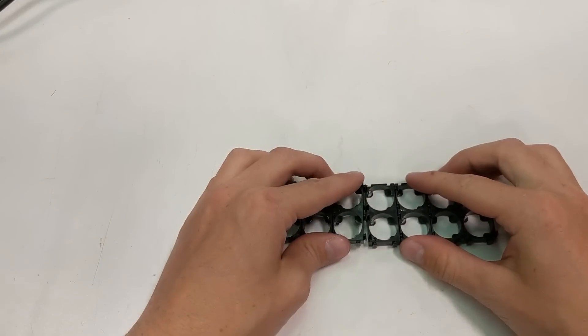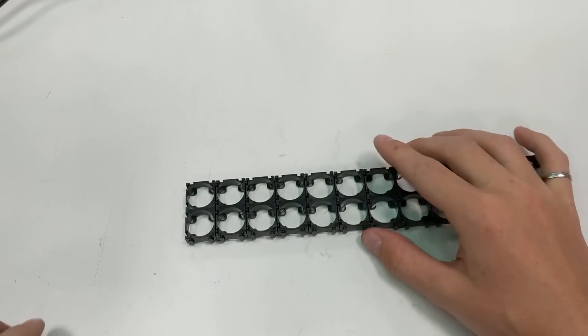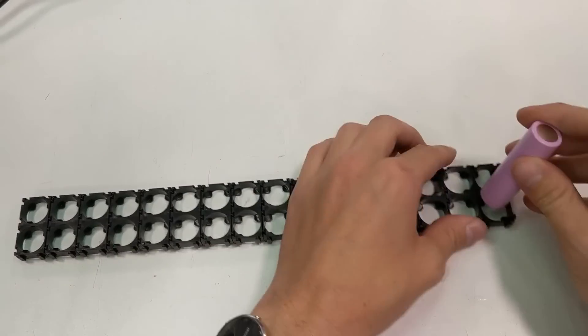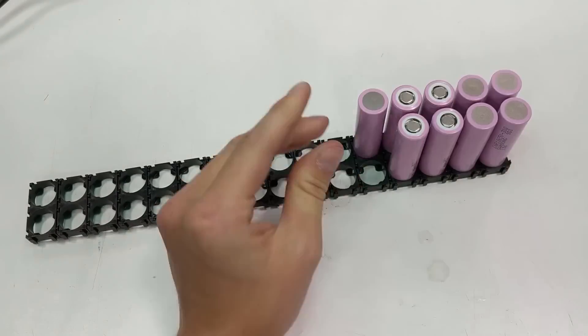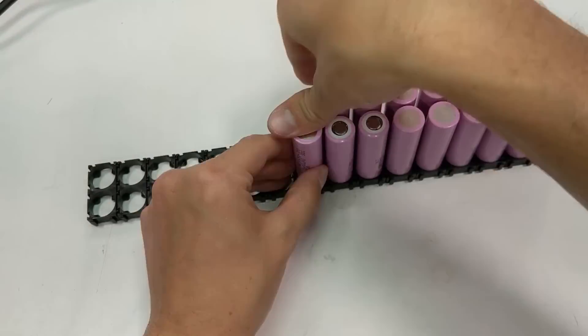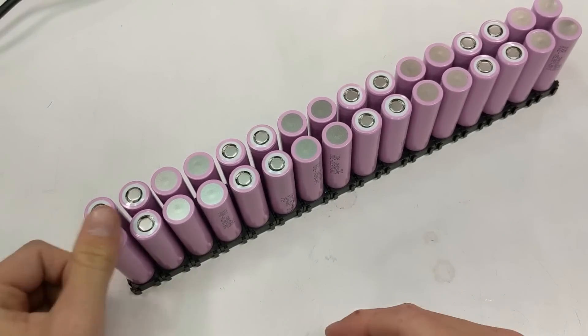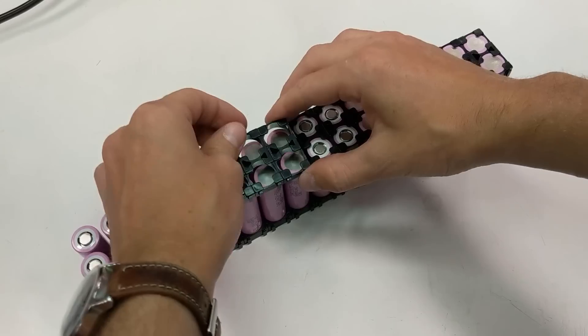At this point, it's just rinse and repeat: push the cells into the plastic cell holders, cut the busbars to length, and make the welds. The best way to go about this for large battery packs is to break it up into small sections that can be worked on individually and then later joined together. Working on a really large battery pack all together can be quite cumbersome. I'll skip over the rest of the welding, as it's pretty repetitive from here on out.